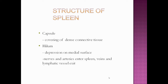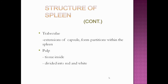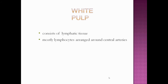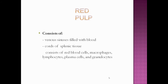The structure of the spleen includes: the capsule — the outermost covering of dense connective tissue — and the hilum, a depression on the medial surface where nerves and arteries enter and veins and lymphatic vessels exit. Trabeculae are extensions of the capsule forming partitions within the spleen. The pulp inside is divided into red and white pulp. White pulp consists of lymphatic tissue with lymphocytes arranged around central arteries. Red pulp consists of venous sinuses filled with blood and cords of splenic tissue containing red blood cells, macrophages, lymphocytes, plasma cells, and granulocytes.